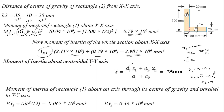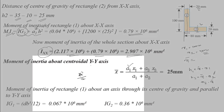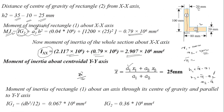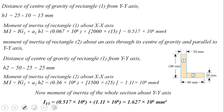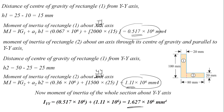For the YY axis, the formula is DB³/12. For section 1: IG_Y1 gives 0.067×10⁶ mm⁴; moment of inertia of section 1 about YY = 0.51×10⁶ mm⁴. For section 2: 1.11×10⁶ mm⁴. The total moment of inertia about the YY axis = 1.627×10⁶ mm⁴.